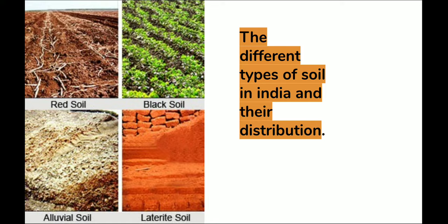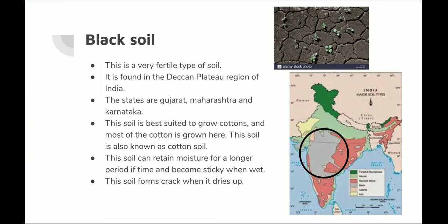There are four main types of soil distribution in India: red soil, black soil, alluvial soil, and laterite soil. First, black soil — you can see from the picture that the color of this soil is black. It is a very fertile type of soil mainly found in the Deccan Plateau region of India, in states like Gujarat, Maharashtra, and Karnataka. It is best suited to grow cotton and is also known as cotton soil. It can grow sugarcane and a variety of other crops.